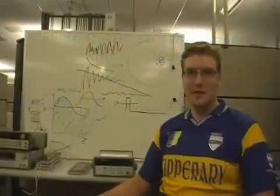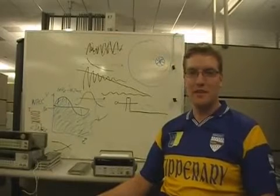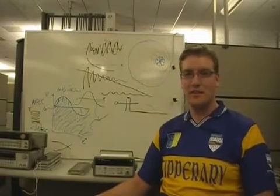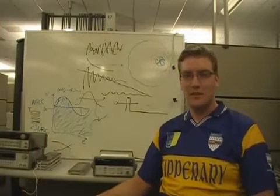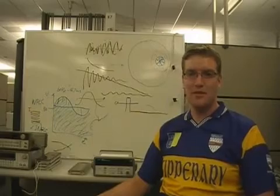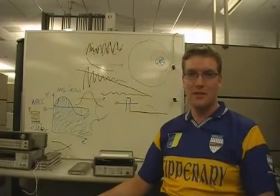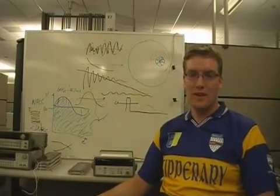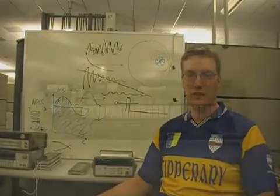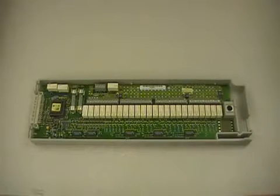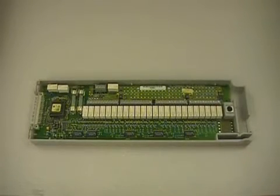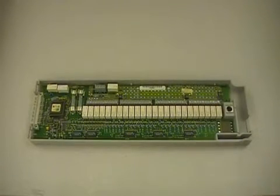Hi, my name is Steve Muller and I'm an application engineer with Agilent Technologies. Today I'm going to show you how to make current measurements using a shunt resistor with the Agilent 34972A. This is the 34901A, our most popular MUX card for the 34972.